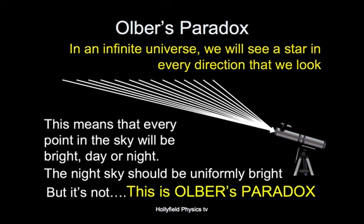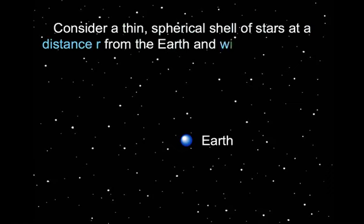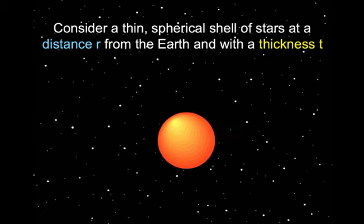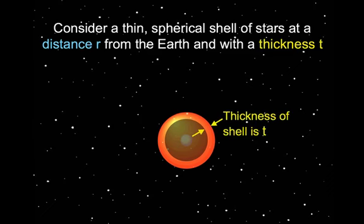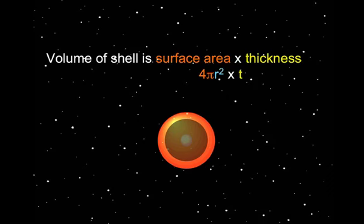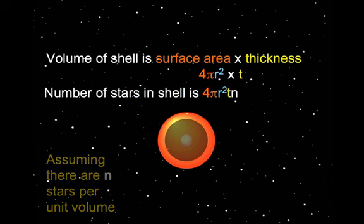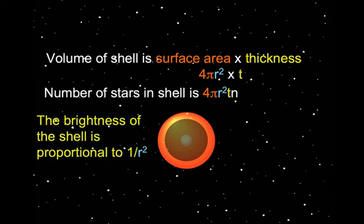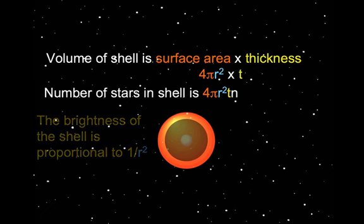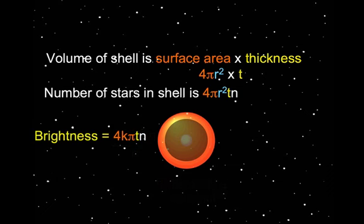Now we need to look at this in a slightly more mathematical way. So if we look at the Earth there out in space, and we consider a thin spherical shell of stars — what we're going to do is calculate how many stars are in our thin spherical shell. The thickness of the shell is T, and it's got a radius of R — in other words, its distance from the Earth is R. The volume of that spherical shell is its surface area times its thickness. The surface area of the sphere is 4πr². We'll have n stars per unit volume of space, so the total number of stars in the shell is 4πr²Tn. The brightness of the shell, by the inverse square law, is proportional to 1 over r². And that gives us 4kπr²Tn over r², and the r²s cancel out.